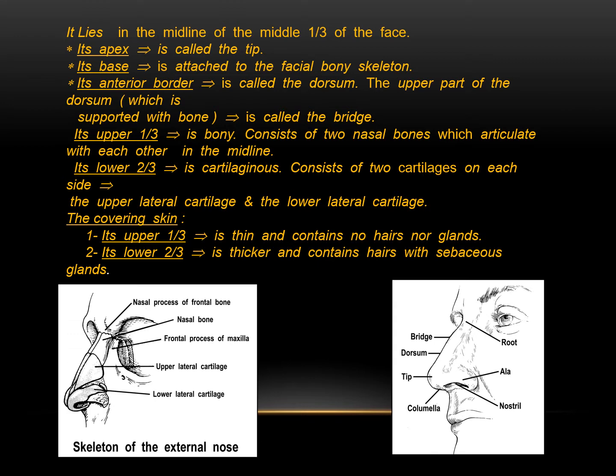The lower two-thirds of the external nose is cartilaginous, consisting of two cartilages on each side: the upper lateral cartilage and the lower lateral cartilage. The covering skin in the upper third is thin and contains no hairs nor glands. Its lower two-thirds is thicker and contains hairs with sebaceous glands.